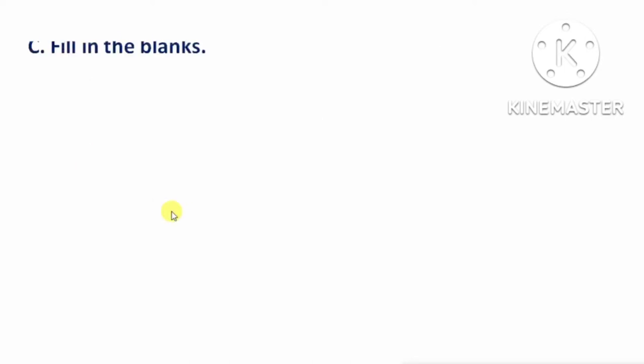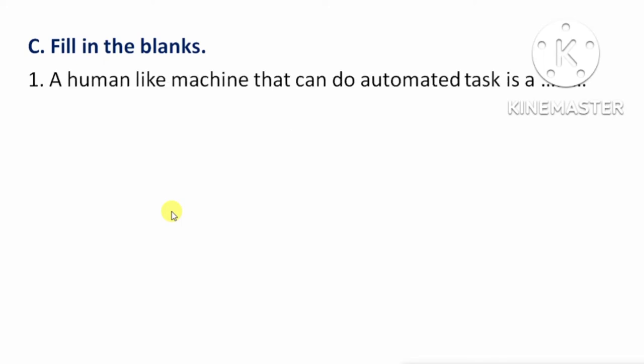Fill in the blanks. First question: a human-like machine that can do automated tasks — means, एक इंसानों की तरह दिखने वाली machine जो automated tasks को करती है, उसे कहते हैं। Answer: Robot.